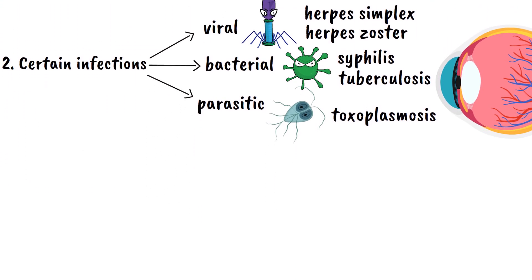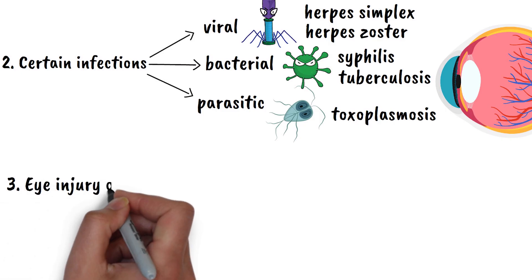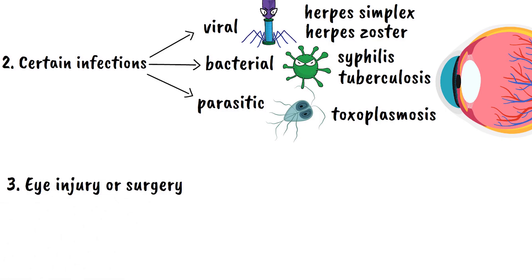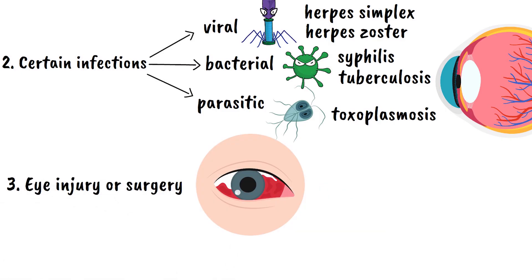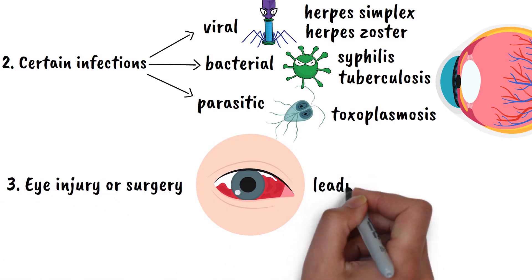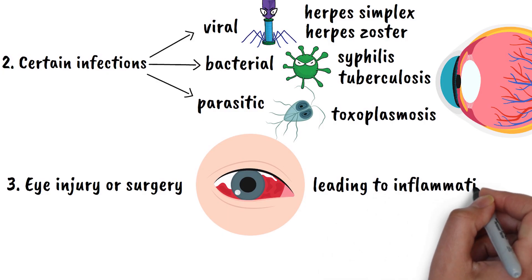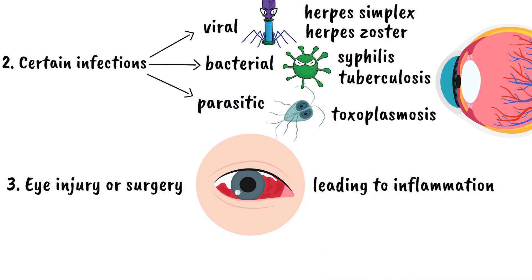Some people develop uveitis following an eye injury or surgery. The trauma can disrupt the normal immune privilege that the eye enjoys, leading to inflammation — like accidentally damaging the security system in your house, making it more vulnerable to problems.